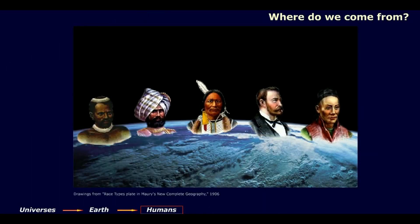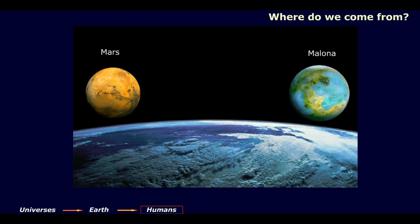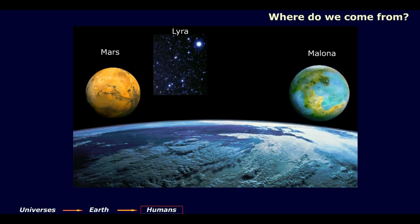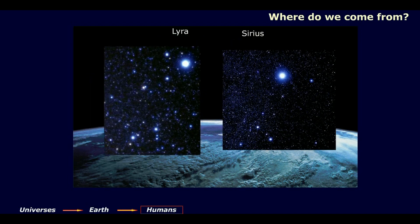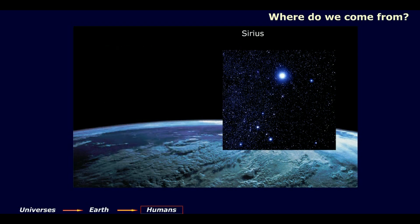Currently on Earth we have remnants of five different kinds of human beings who are of extraterrestrial origin. They came from Mars, former planet Malona, the constellation of Lyra-Vega, and the Sirius region. The planets of the two latter locations are shifted from our space-time configuration, which means that they cannot be seen from Earth.